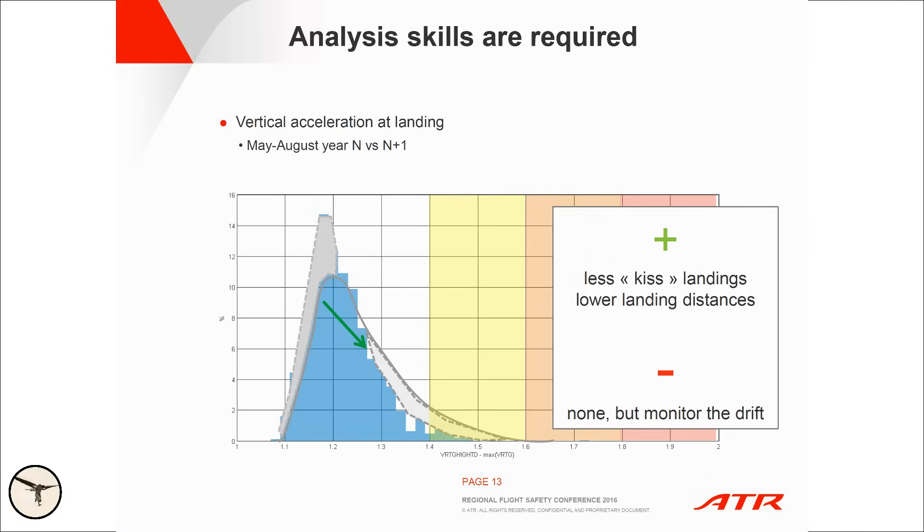Therefore, the positive side of this drift: less kiss landings and shorter landing distances, all good, of course. And someone was mentioning this this morning. Of course, you need to keep monitoring to make sure it does not drift too far towards hard landings. But that's what FDM is done for. You solve an issue on the one hand, and you need to monitor and not disturb the rest. That's the whole point.